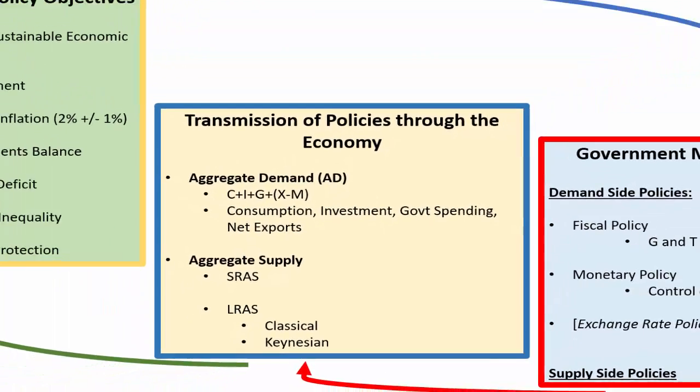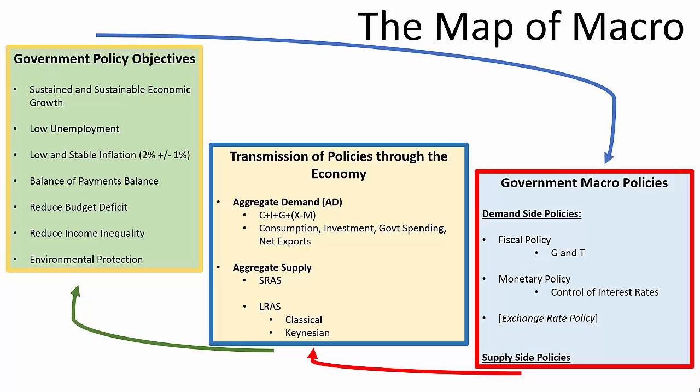You can see then that when the government changes macro policies, it gets transmitted through the economy through aggregate demand and supply. This meets the objectives, which then will change the policies again and the effects get transmitted through and so on. So that's why I call it the map of macro.